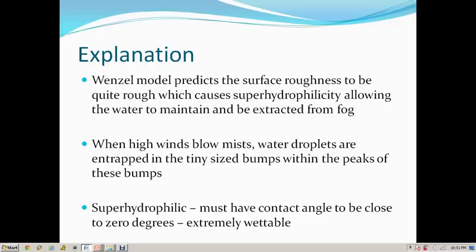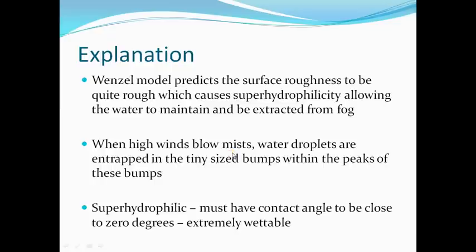In order to be super hydrophilic, the surface must be extremely wettable and must have a contact angle close to 0 degrees. In this case, 5 degrees is very close to 0 degrees, so water would cling on and form larger droplets. That explains the first part of how the beetle captures water from misty fog using high winds, without the water droplets being blown away.